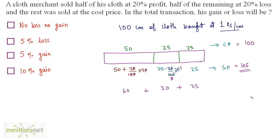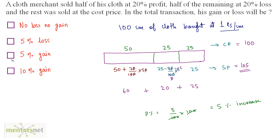To confirm: profit percent = (selling price − cost price) / cost price × 100 = (105 − 100) / 100 × 100 = 5%. So there is a 5% gain, and option C is the correct answer.